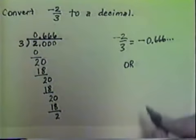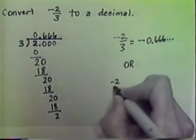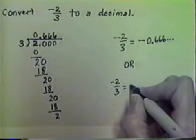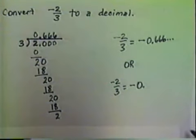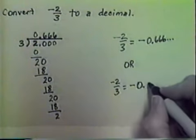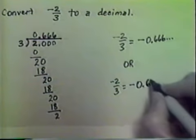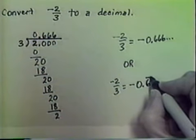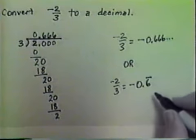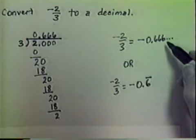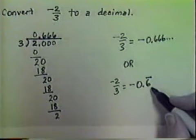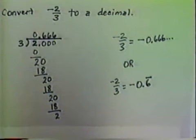Or, we can write negative two-thirds as negative zero point six, with a bar over it — a notation that means this pattern continues forever. This means exactly the same thing as point six, six, six, six, and so on. So negative zero point six with a bar over it means the repeating decimal point six, six, six, and so on.